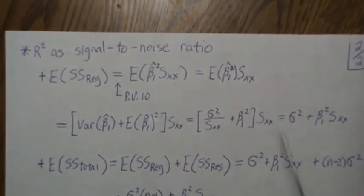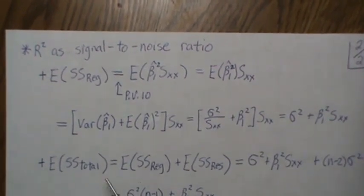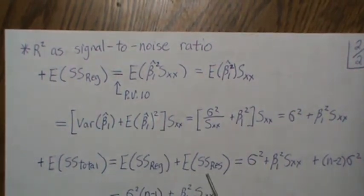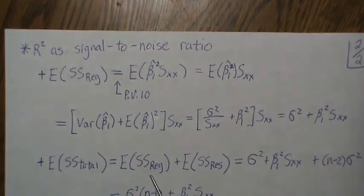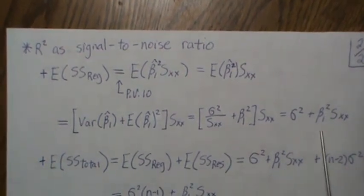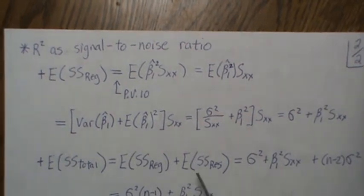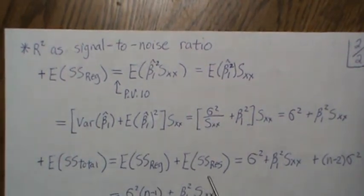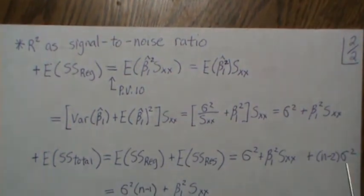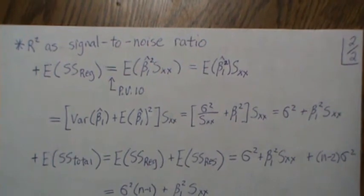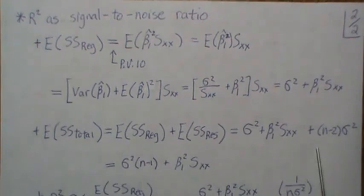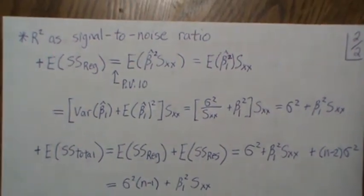The expected value of SST can be computed, and the expected value of SSE was shown in previous videos. The expected value of SSR comes out to beta_1² · Sxx + sigma². Dividing SSE by n − 2 gives an unbiased estimate for sigma², giving (n − 2)·sigma² for E[SSE]. These calculations then simplify to a clean expression.